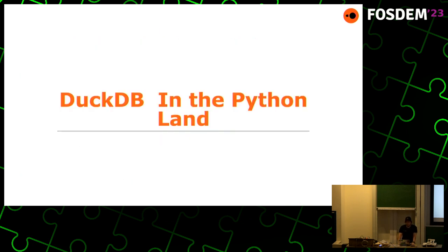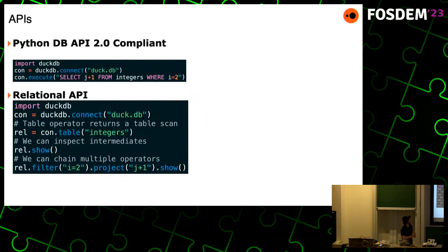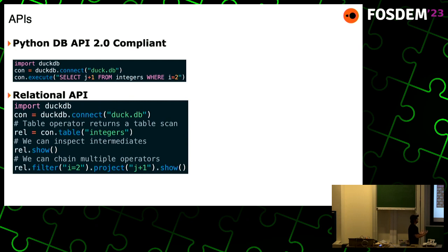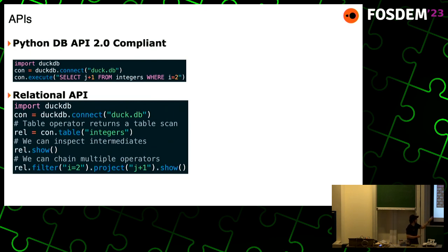Now DuckDB in the Python land. We have an API that is DB API 2.0 compliant, very similar to what SQLite has — you can create a connection and start executing queries. We also wanted something similar to the DataFrame API so people coming from Pandas have something familiar. You can create a connection, create a relation that looks like a DataFrame pointed to a table, do a show to inspect it, and apply chaining operators like filter and projection. This is all lazily executed, allowing you to take advantage of DuckDB's optimizer even with chaining operations.